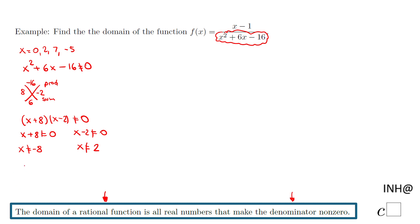So the domain of this function is: x where x is not equal to -8 and x is not equal to 2. This is one way to describe the domain in roster form.